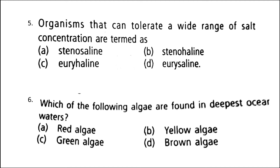Next: which of the following algae are found in the deepest ocean waters? A. Red algae, B. Yellow algae, C. Green algae, D. Brown algae. The correct option is option A. The red color of red algae is due to the abundant formation of phycoerythrin, which is able to absorb blue-green wavelengths of light. Being shorter, these wavelengths are able to reach the maximum depth in water. Therefore, red algae can be found in the deepest ocean water.